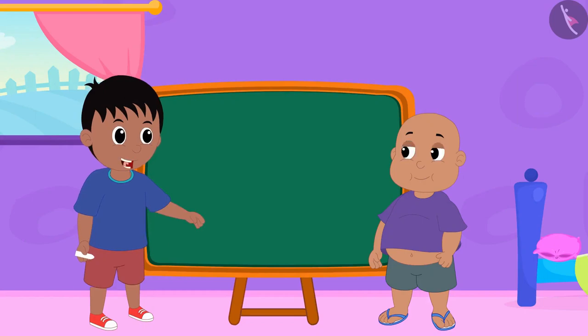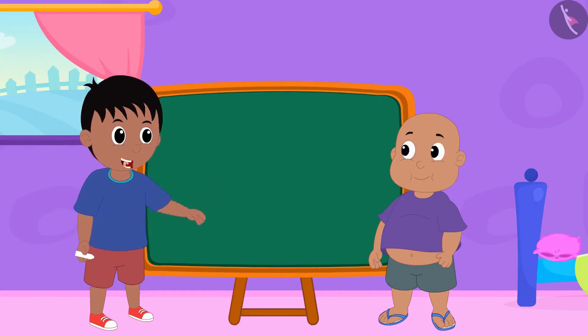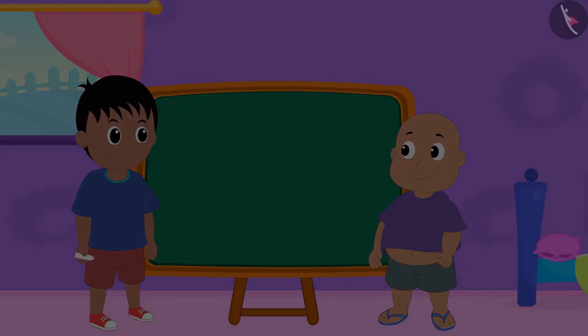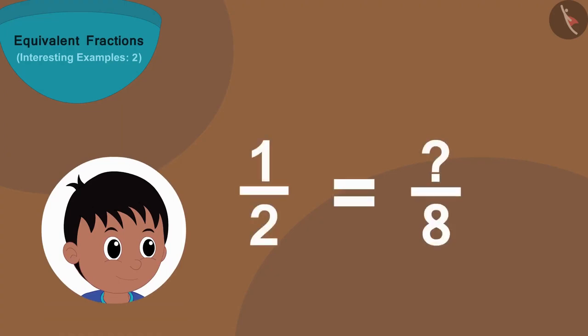Today Raju and Bablu are playing a unique game. Raju will write a fraction, then he will write the number below the equivalent of that fraction, and Bablu will have to find the number above it.